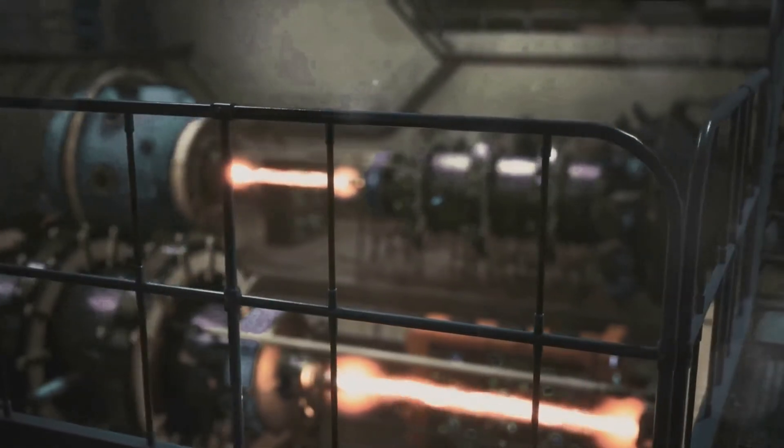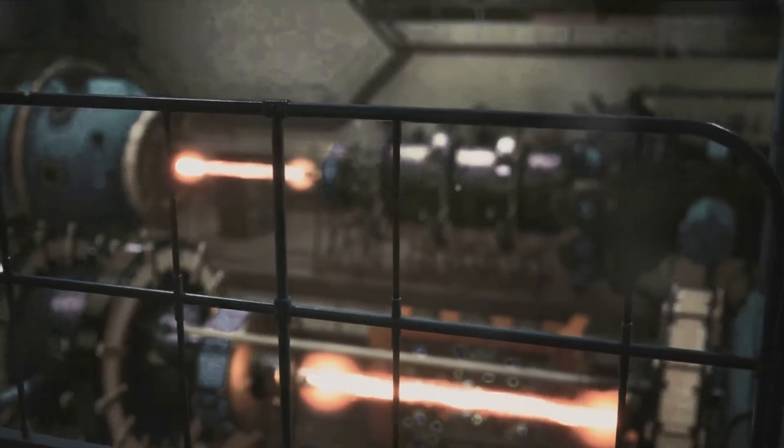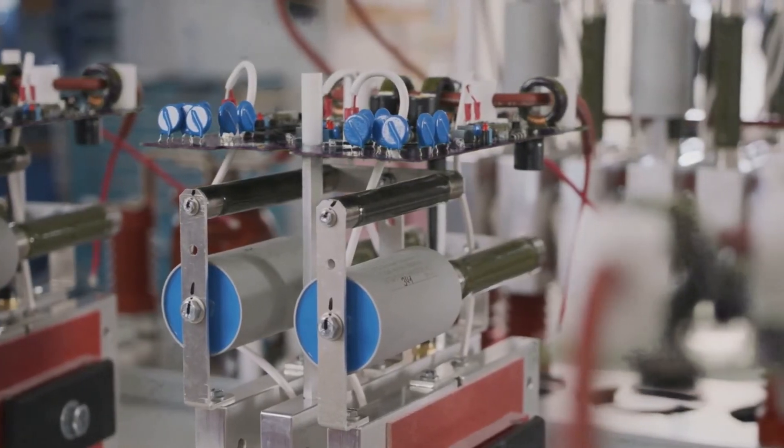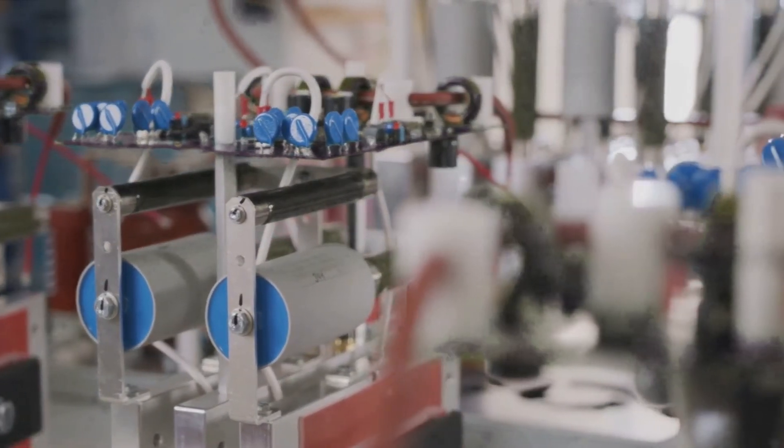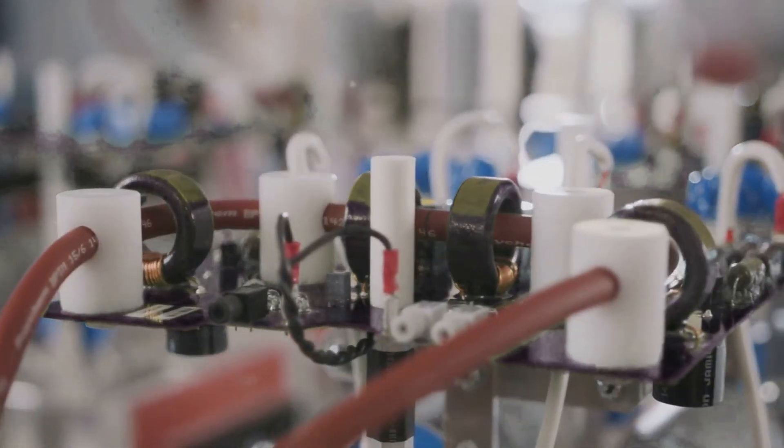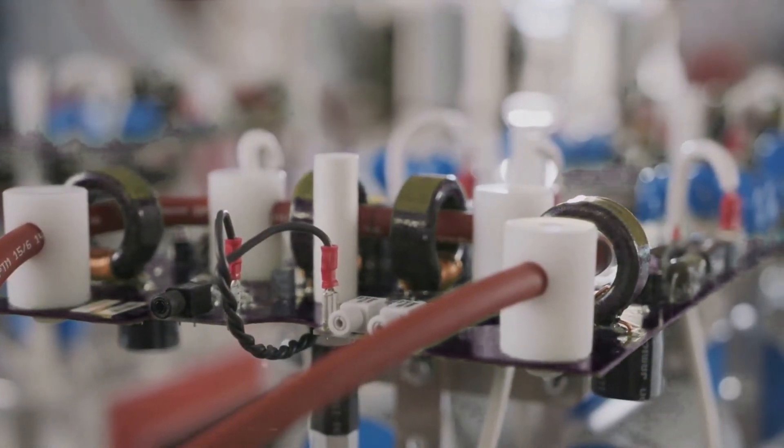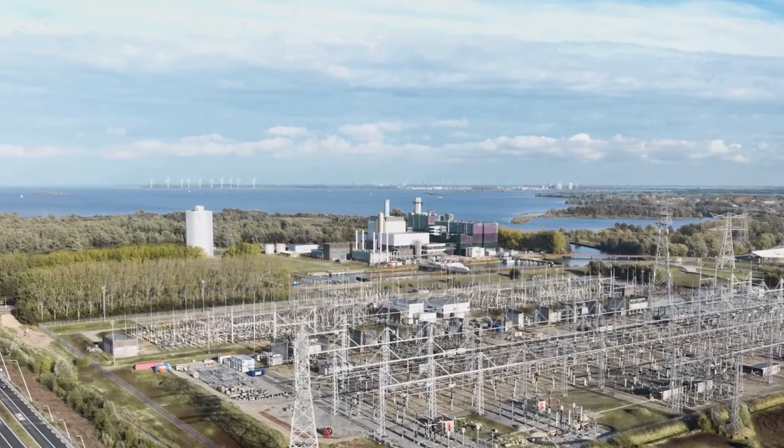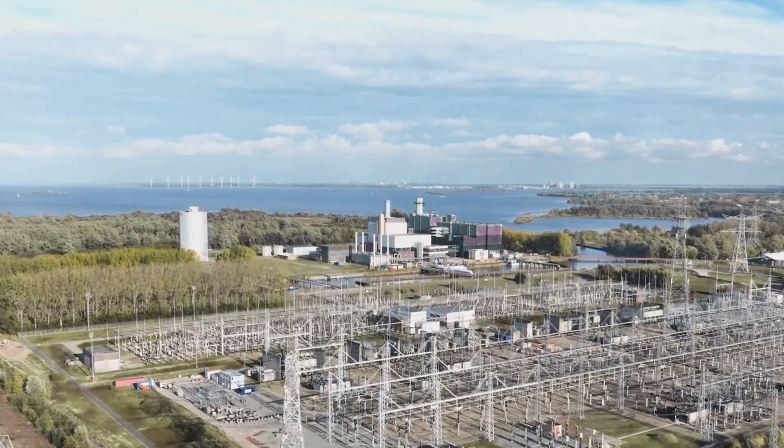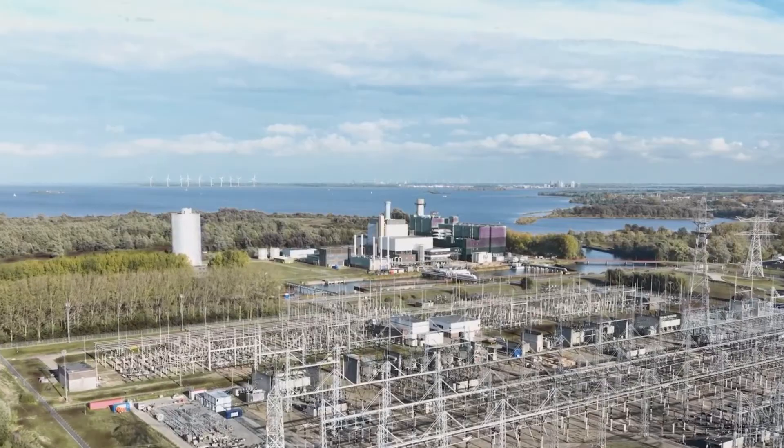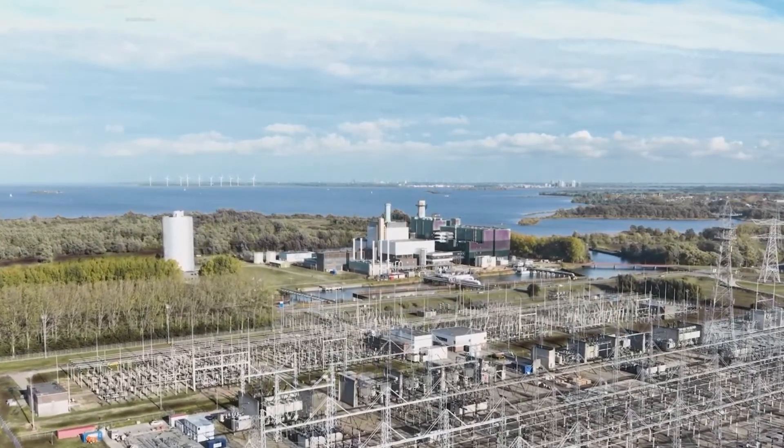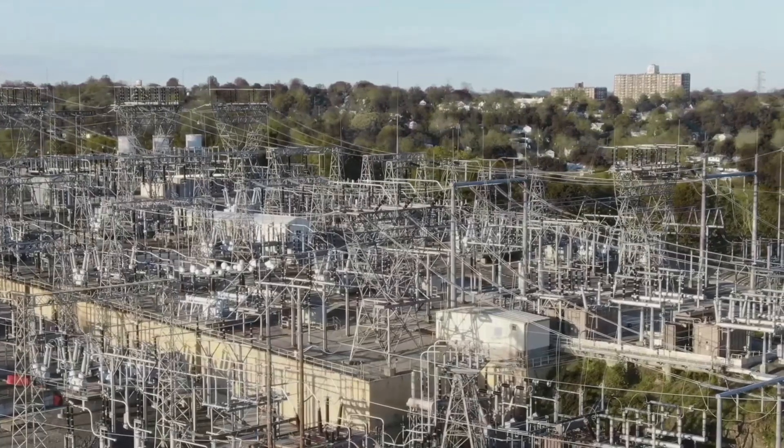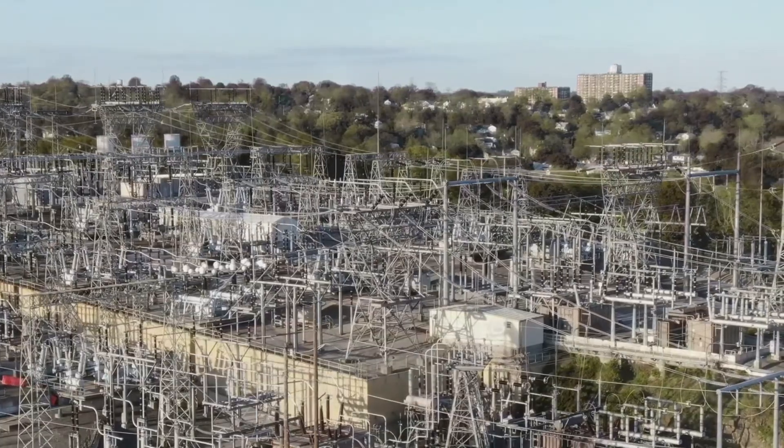Next, we looked at various compensation techniques that engineers use to optimize the power factor and manage reactive power. From capacitor banks to synchronous condensers, these methods ensure that our power systems operate at their peak efficiency. Finally, we brought theory into practice with real-life examples, demonstrating how reactive power impacts different elements of a power system.